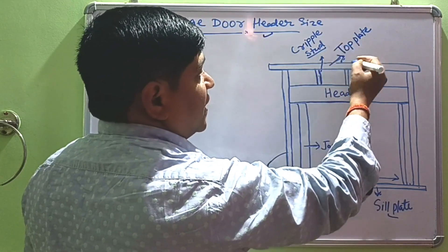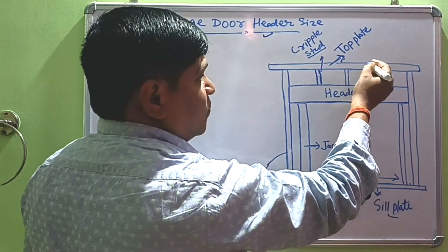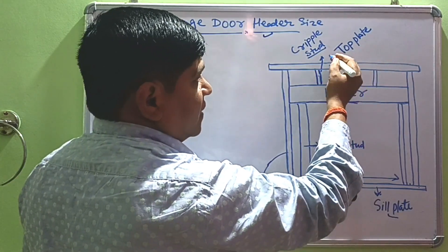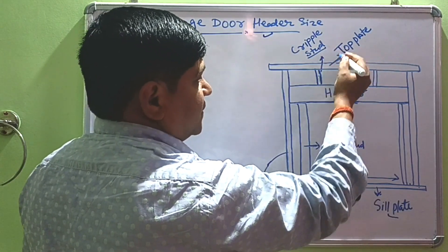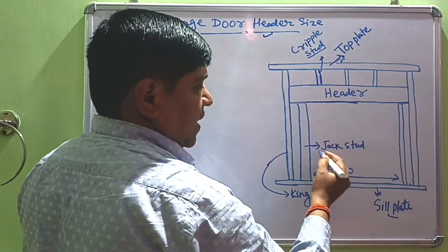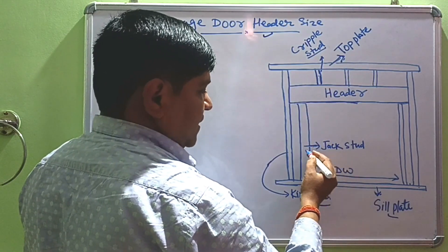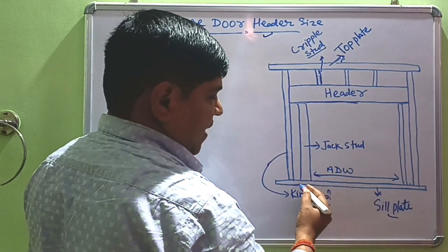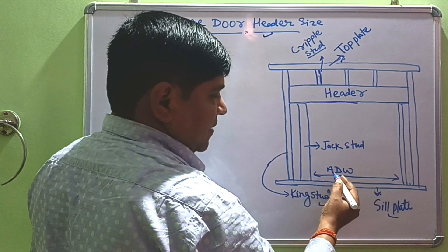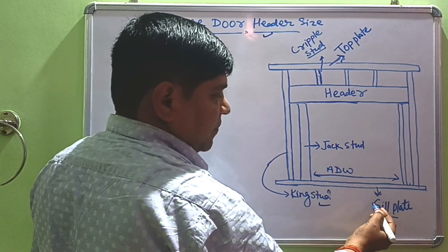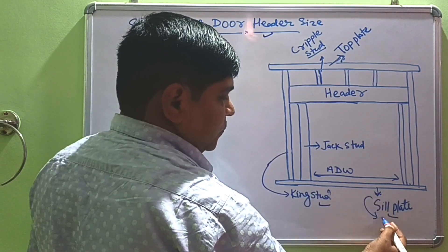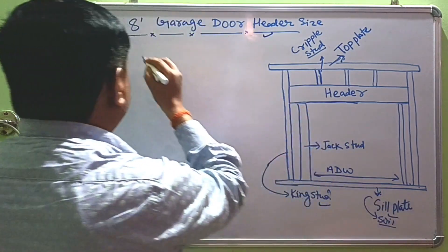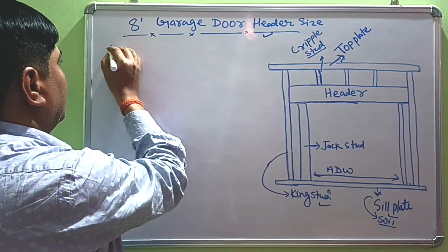Above the header, this is the cripple stud for supporting the load, and this is the top plate. The function of the header is to collect the load above the structure and transfer it to the jack stud. The jack stud transfers to the king stud, and finally the king stud transfers its load to the sill plate and then down to the foundation.